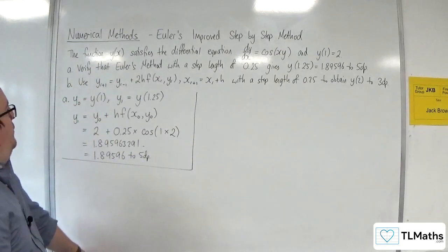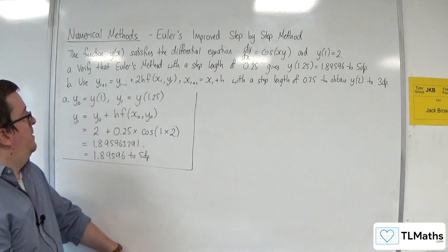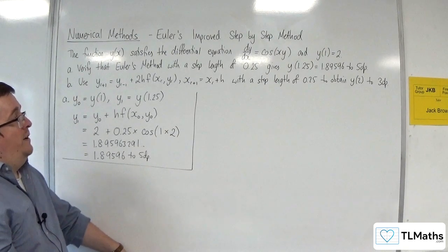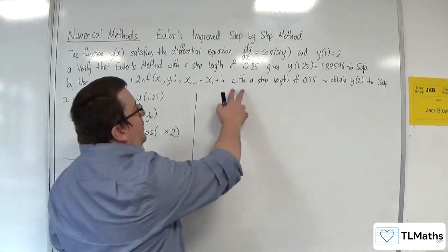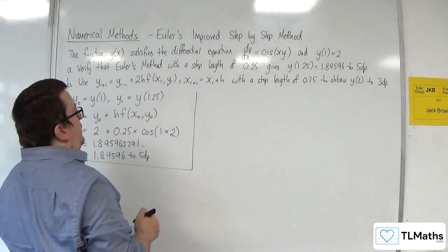Okay, right, so part B: use yr plus 1 equals yr minus 1 plus 2h times f of xr, yr, where xr plus 1 is xr plus h, with a step length of 0.25 to obtain y of 2 to 3 decimal places.